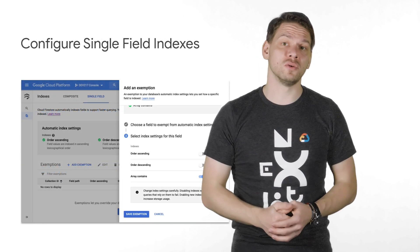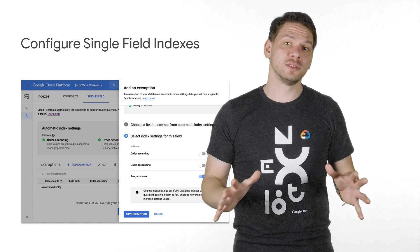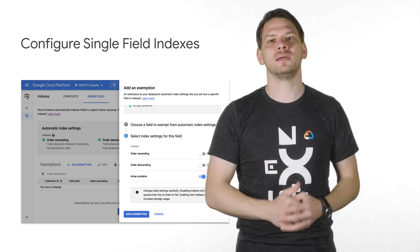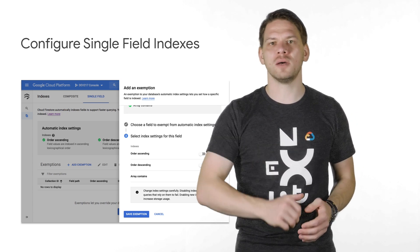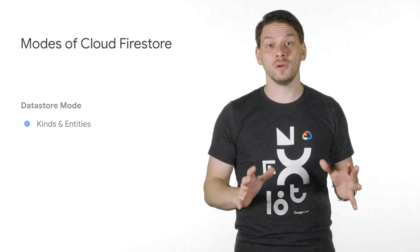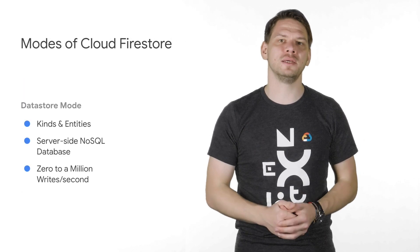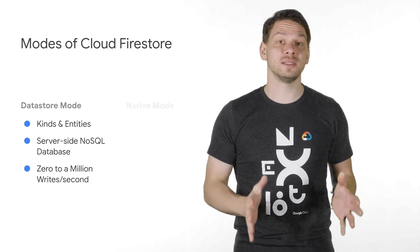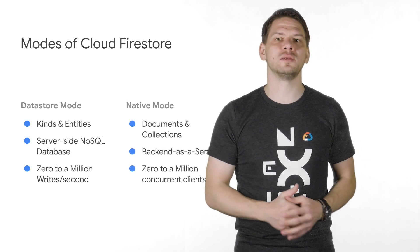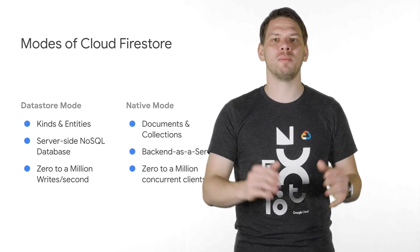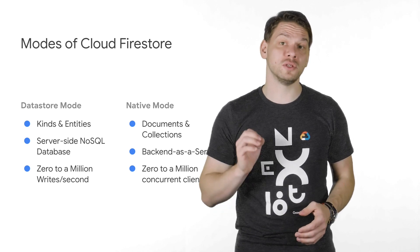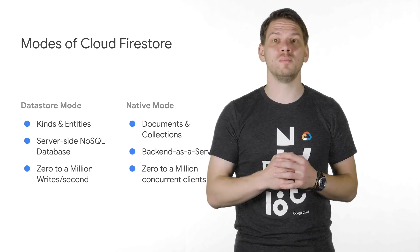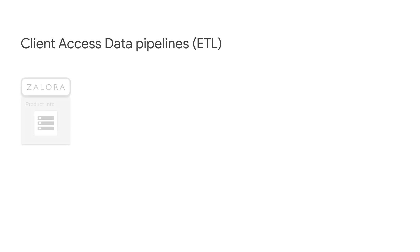One more word on Datastore versus Native mode: Cloud Firestore can be used in these two different modes, but not at the same time, so you need to make a choice upfront. Datastore mode is used for backwards compatibility and high write throughput applications, whereas Native mode is best used as a backend-as-a-service for mobile and web applications, allowing synchronization of state between multiple devices for up to millions of concurrent users.